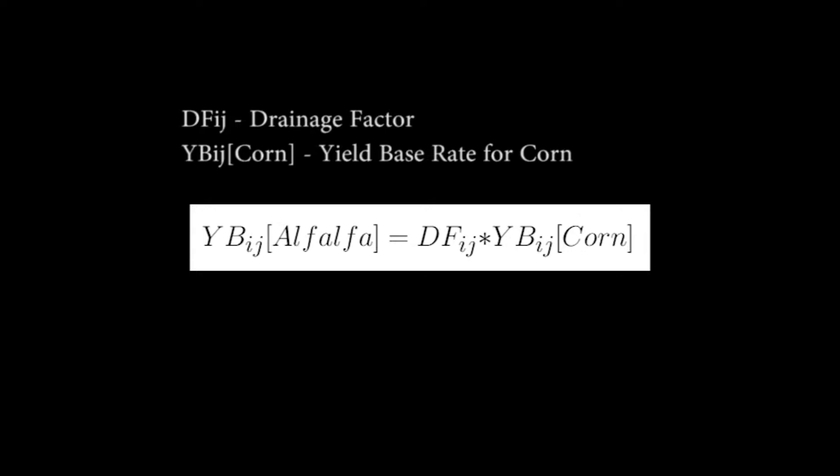multiplied by a conversion factor from tons to megagrams, with a minimum of 8.07 megagrams per hectare per year, or 3.6 tons per acre per year.